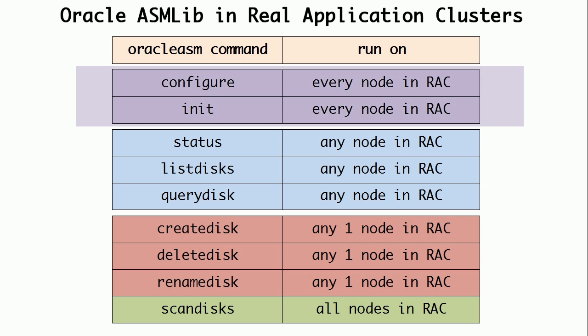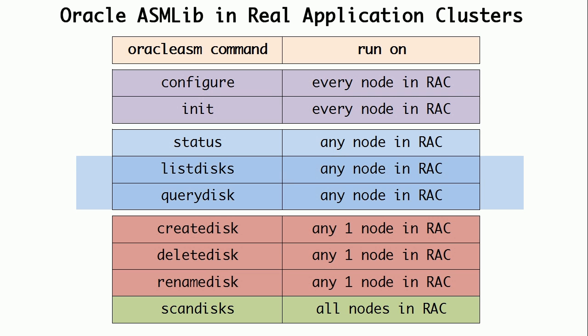Oracle ESM-LIB needs to be configured and initialized on every node in Real Application Clusters. Oracle ESM Status command can be executed on any node in RAC to get the status of the ESM-LIB kernel driver on that specific node. It needs to be executed on every node of RAC if we need to know the status on each node. Oracle ESM List Disks and Query Disk commands can be executed on any node in RAC.